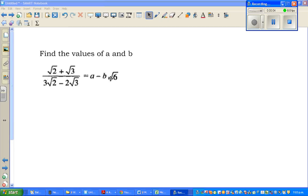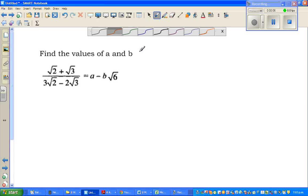Find the value of a and b. If root 2 plus root 3 over 3 root 2 minus 2 root 3 is equal to a minus b root 6. Now this is an example of third form. You need to simplify this.